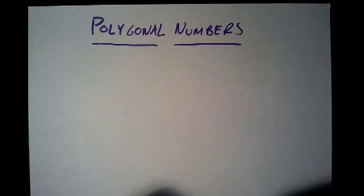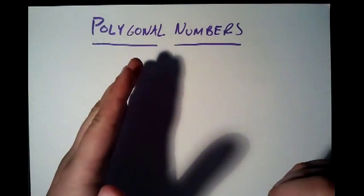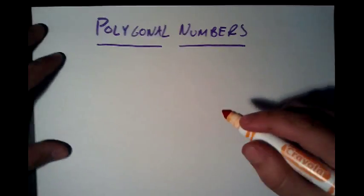We're going to be looking at polygonal numbers today, and we'll start with a geometric definition. So first thing, they're called polygonal numbers, so they have to do with polygons, obviously. So the first polygon we're going to look at is triangle.